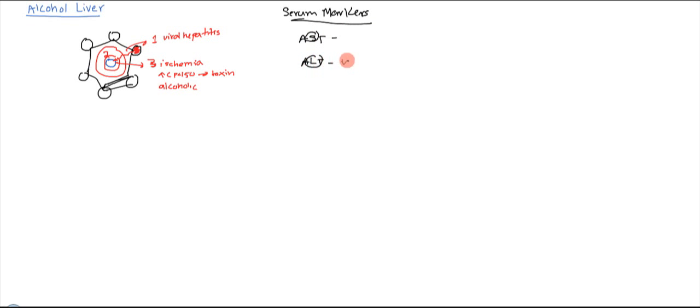So ALT kind of focuses more on the liver. Now anytime you have viral hepatitis, viral hepatitis primarily affects the liver, so you will have an ALT which is greater than the AST. Now as we know, alcohol has effects on other parts of the body as much as it does the liver as well.